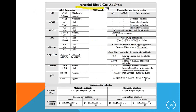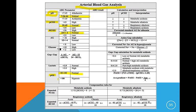Here is a sample arterial blood gas analysis. You need to know: a normal pH is 7.35–7.45, bicarb is 24 ± 2, PCO2 is 35 to 45, and PO2 normal is 80 to 100. Those are the values you should know for now — you'll go into this in depth with Mrs. Kiefer.